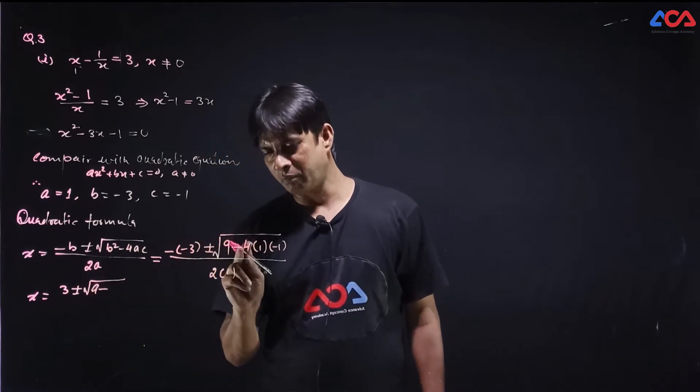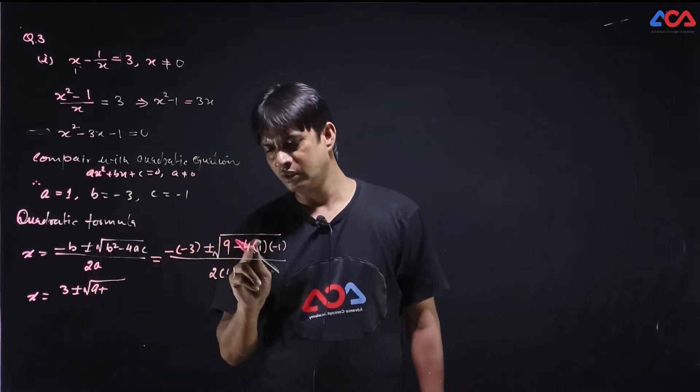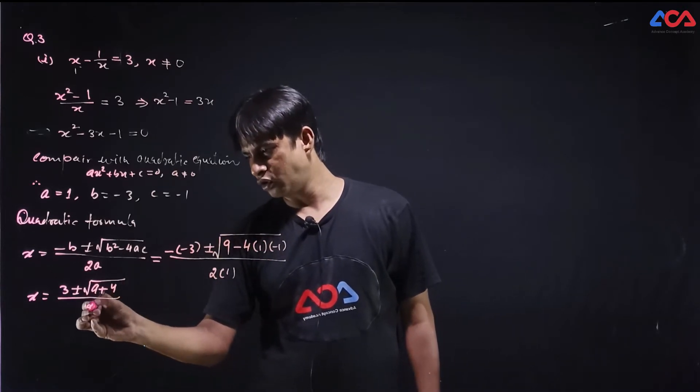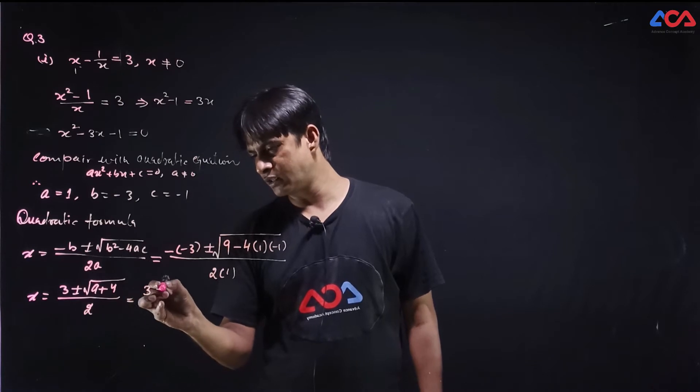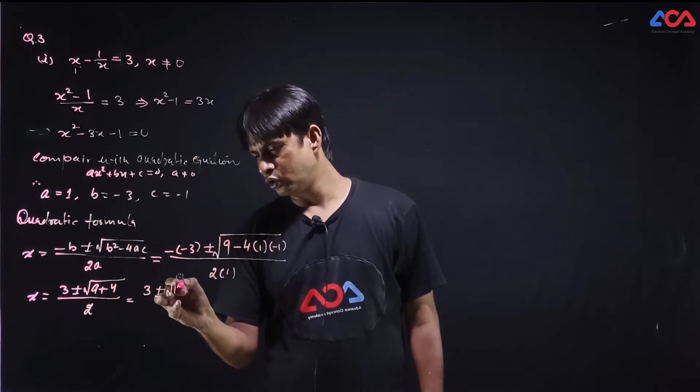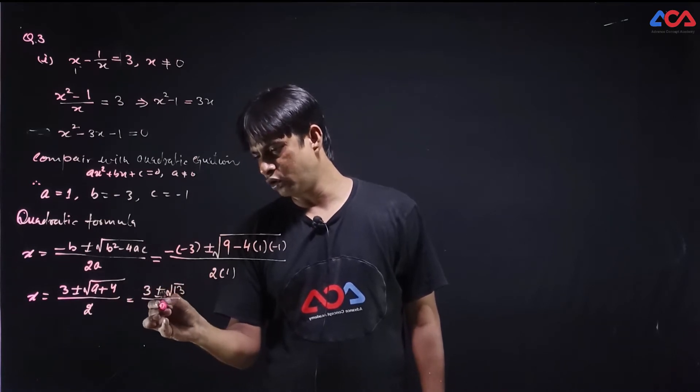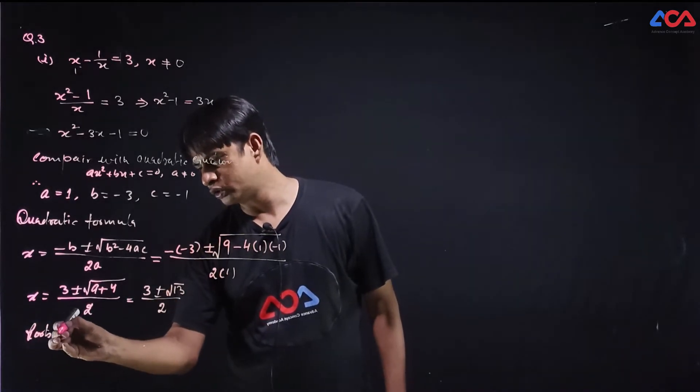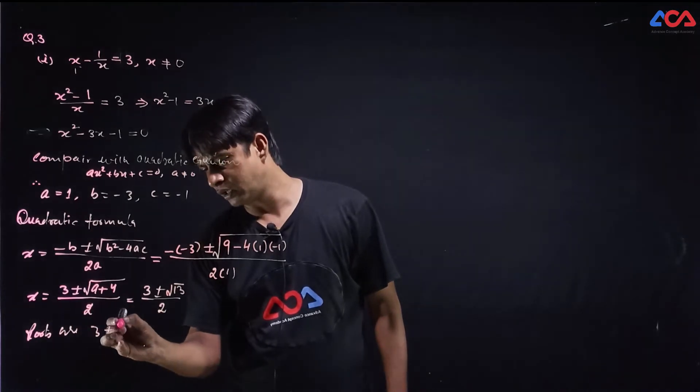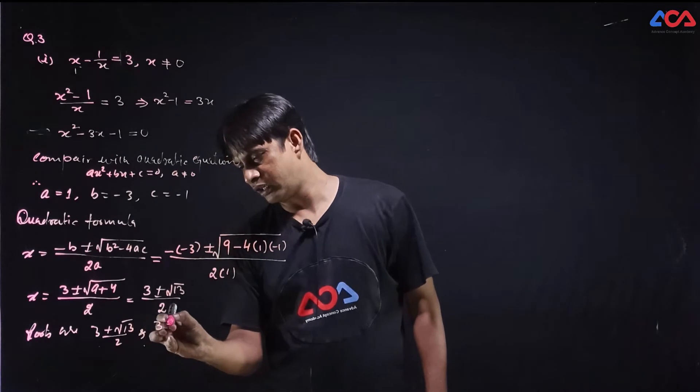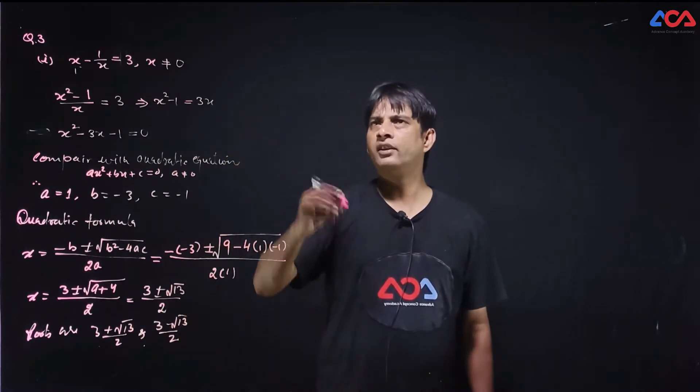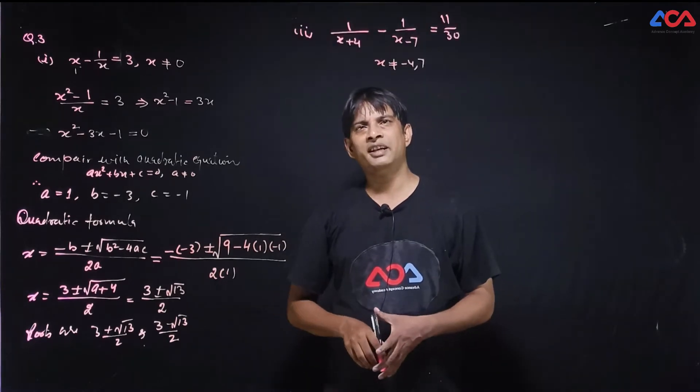9 minus minus minus plus 4 upon 2. Which is equal to 3 plus minus root 13 upon 2. These are roots. How many? Roots are 3 plus root 13 by 2 and 3 minus root 13 by 2. Second part, let's take this. Question 3 second part is